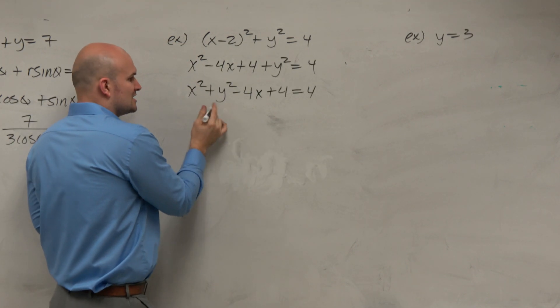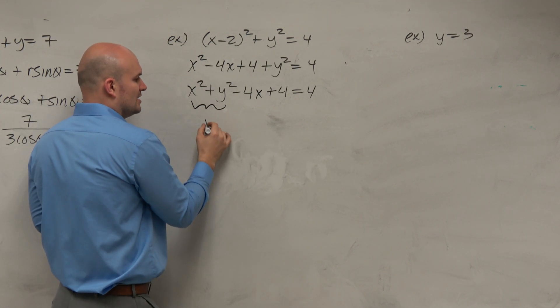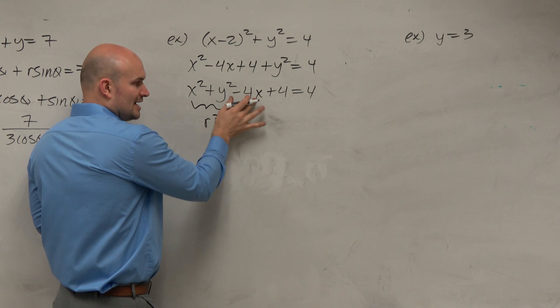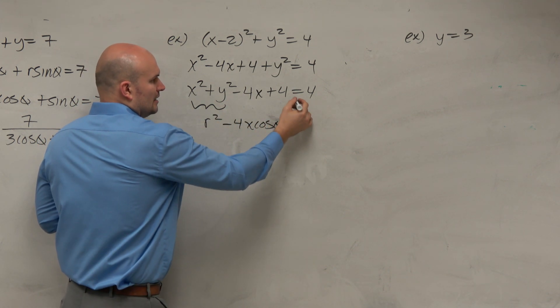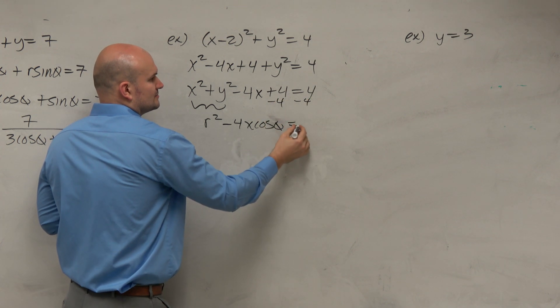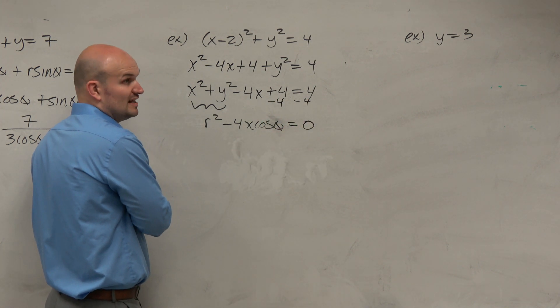So I could replace x squared plus y squared as r squared. I could replace x with r cosine theta. And I could subtract that from both sides.